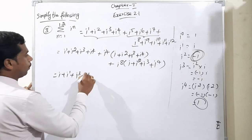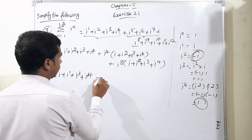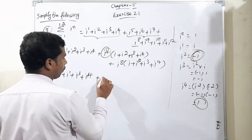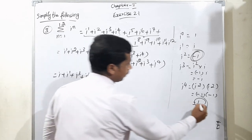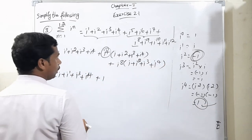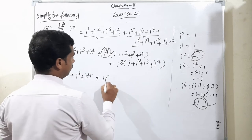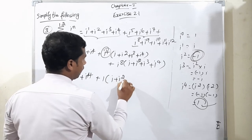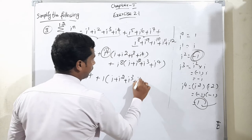In each case, i to the power 4 value is 1 and i to the power 8 value is also positive 1.